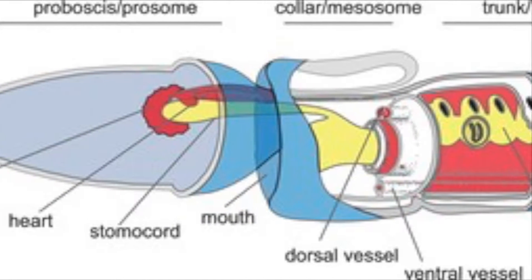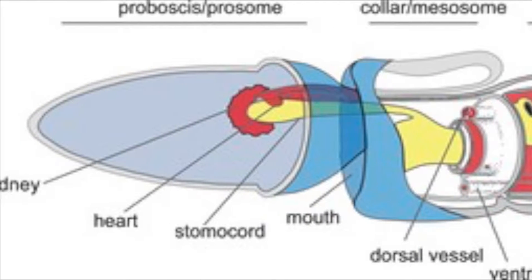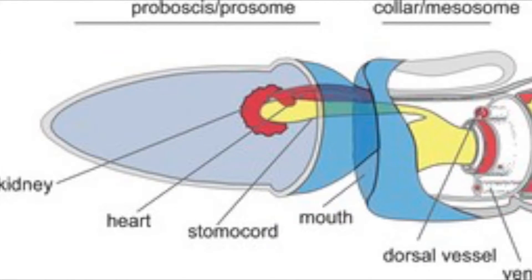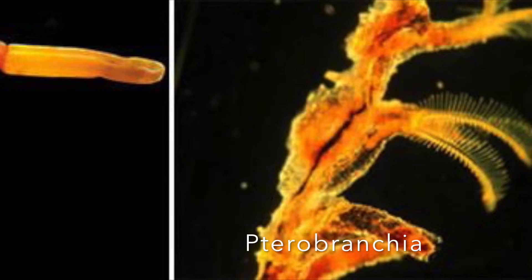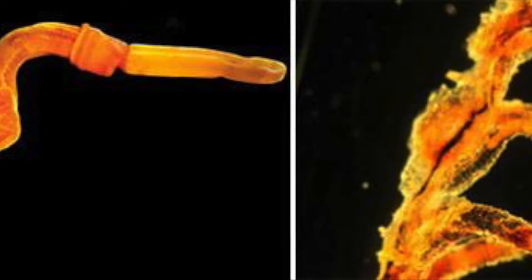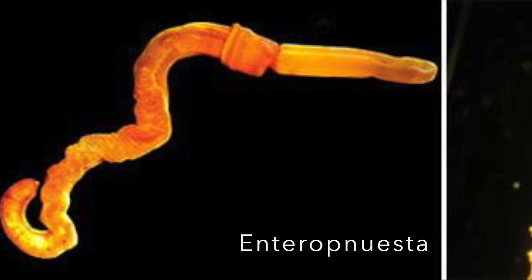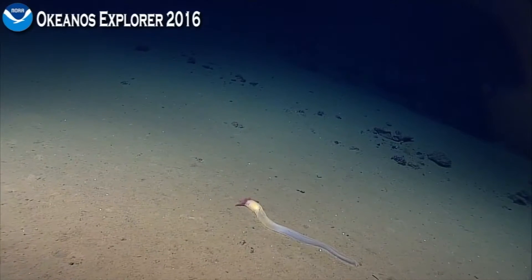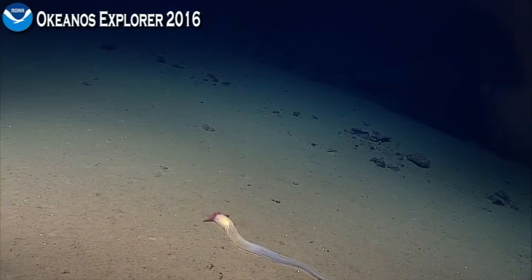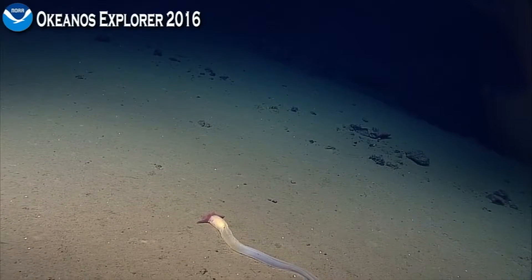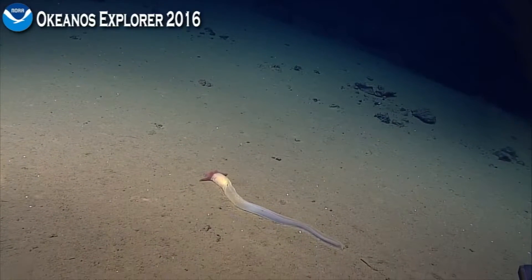Pterobranchia reproduce either asexually or sexually through a brief larval stage and live in interconnected colonies, unlike acorn worms. Hemichordata are three-tissue-layered eucoelomates with bilateral body symmetry. They possess a partially open circulatory system and are supported by a hydrostatic skeleton.